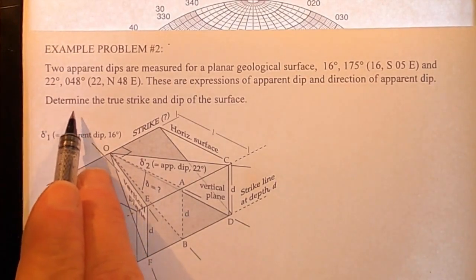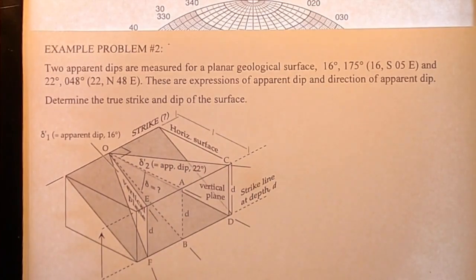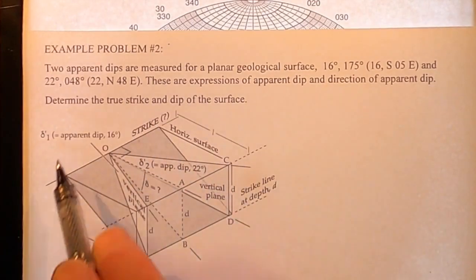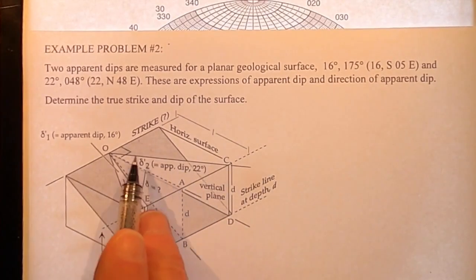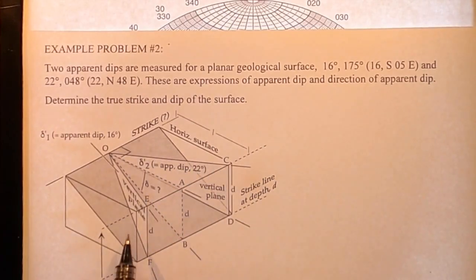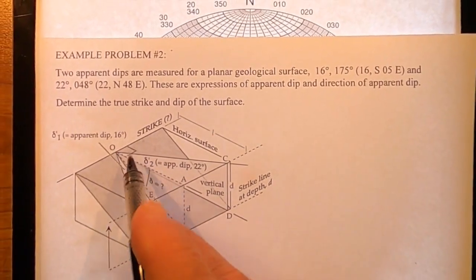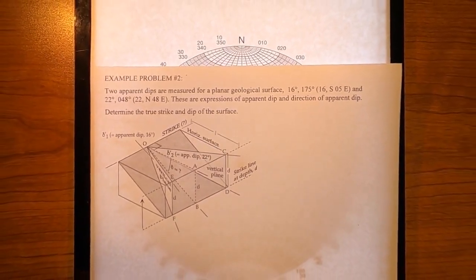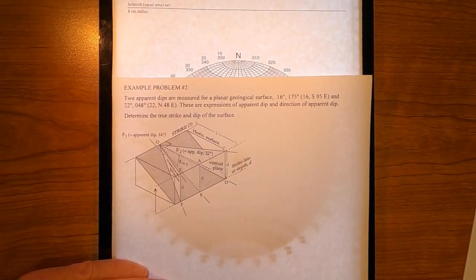What we need to do is to determine the true strike and dip of the surface. And it's schematically illustrated right here. Two apparent dips, 22 degrees off in this direction, 048, and this one is 16 degrees off in this direction, 175, almost to south.